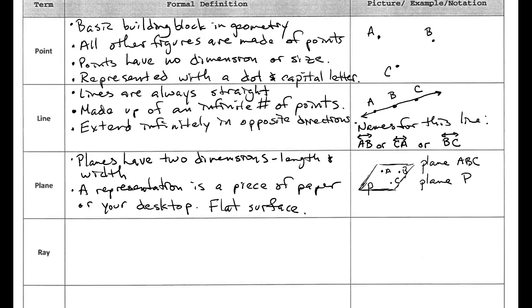Alright before we move on there's actually another way we can name a line. Sometimes we'll put a lowercase letter and I usually like to make it sort of script-ish. So here's a letter M. So sometimes we'll put a little lowercase letter there and we could also call this line M. So when we use a lowercase script letter we know we're talking about a line.